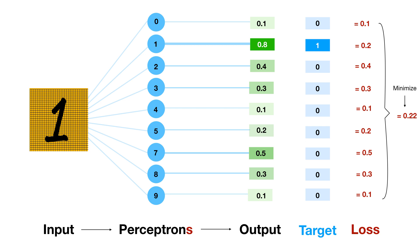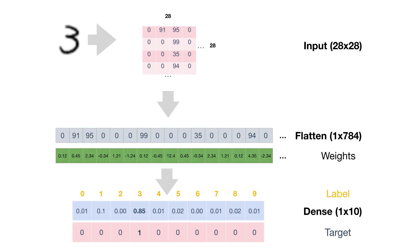What we're specifically going to optimize for is our output being close to the target. Our loss function will be the difference between each of these digits and each of the outputs we want. Here's a quick question to test your understanding: how many weights does our algorithm have now? Let's go to the code.